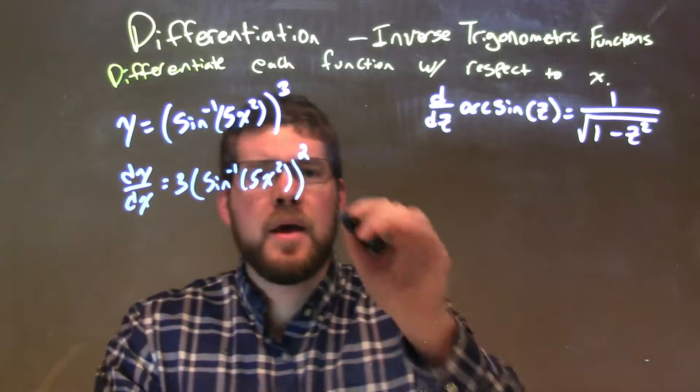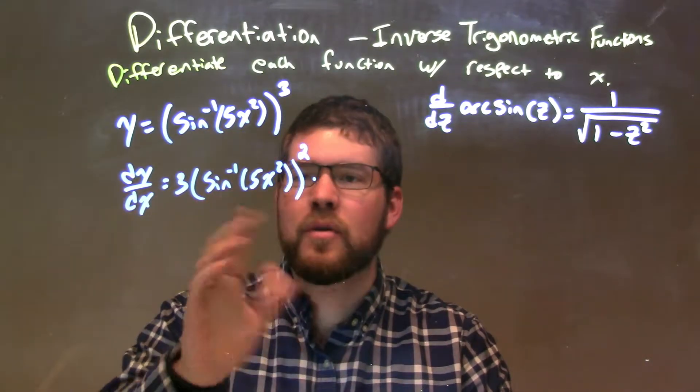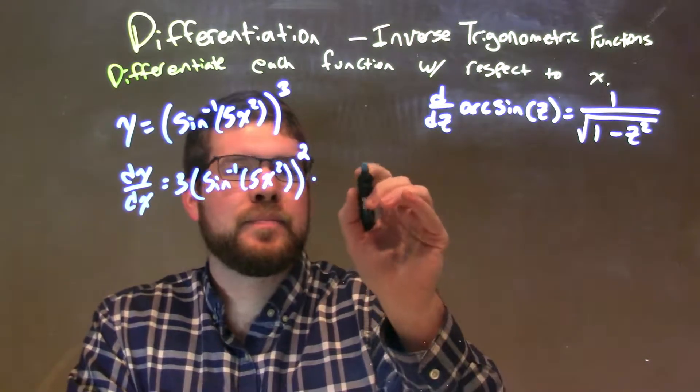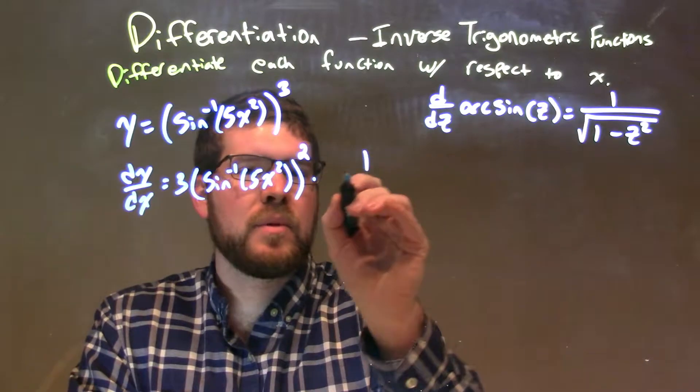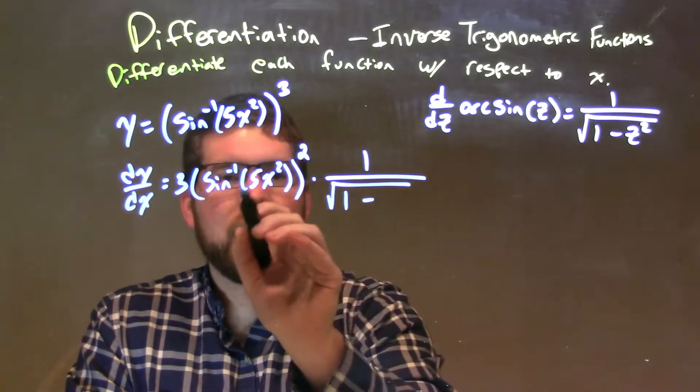We subtract the exponent by one and multiply that by the derivative of the inside. Now the derivative of the inside, the outside part, I have arc sine, so I have to use my rule here. I have 1 over the square root of 1 minus, and once in this little parentheses, square.